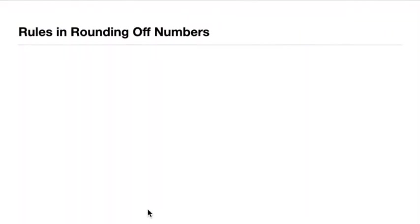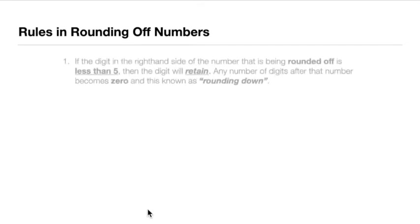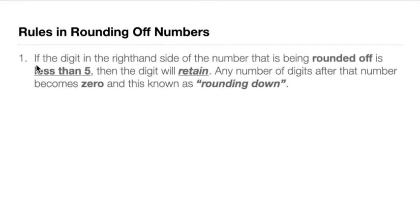There are certain rules when we are rounding off numbers — specifically three rules. Rule number 1: if the digit on the right-hand side of the number being rounded off is less than 5 — that is, 4, 3, 2, 1, or 0 — then the digit will be retained. Any digits after that number become 0. This is known as rounding down.